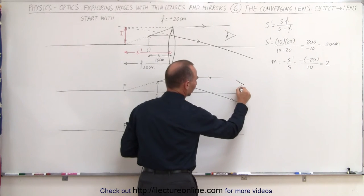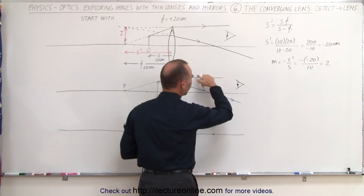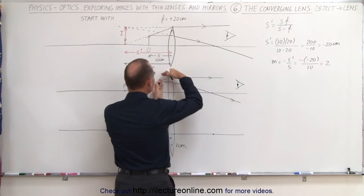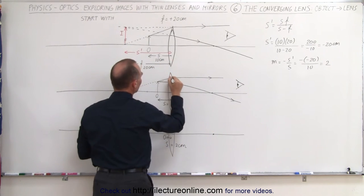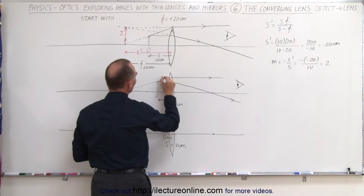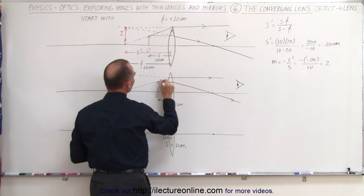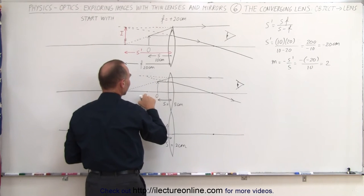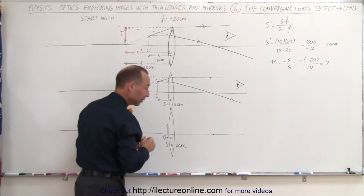The second ray: we need to have a dashed line from the focal point to the tip of the object, then continue in that direction until you hit the lens, and then the lens will bend the light until it's parallel to the optical axis. The observer on this side of the lens will see the two rays diverging. The brain will say it looks like the image must be somewhere back here where the two rays will converge.